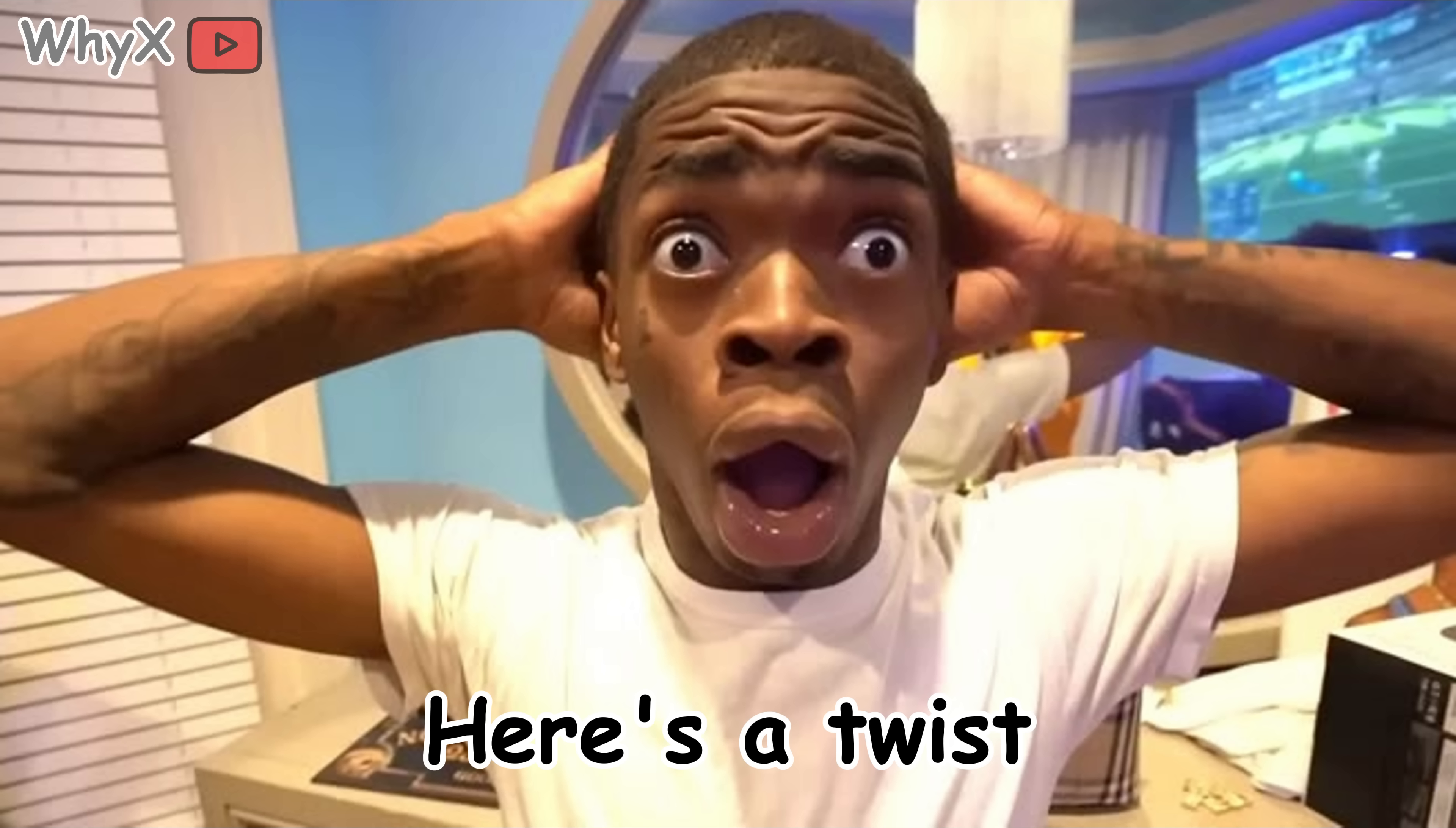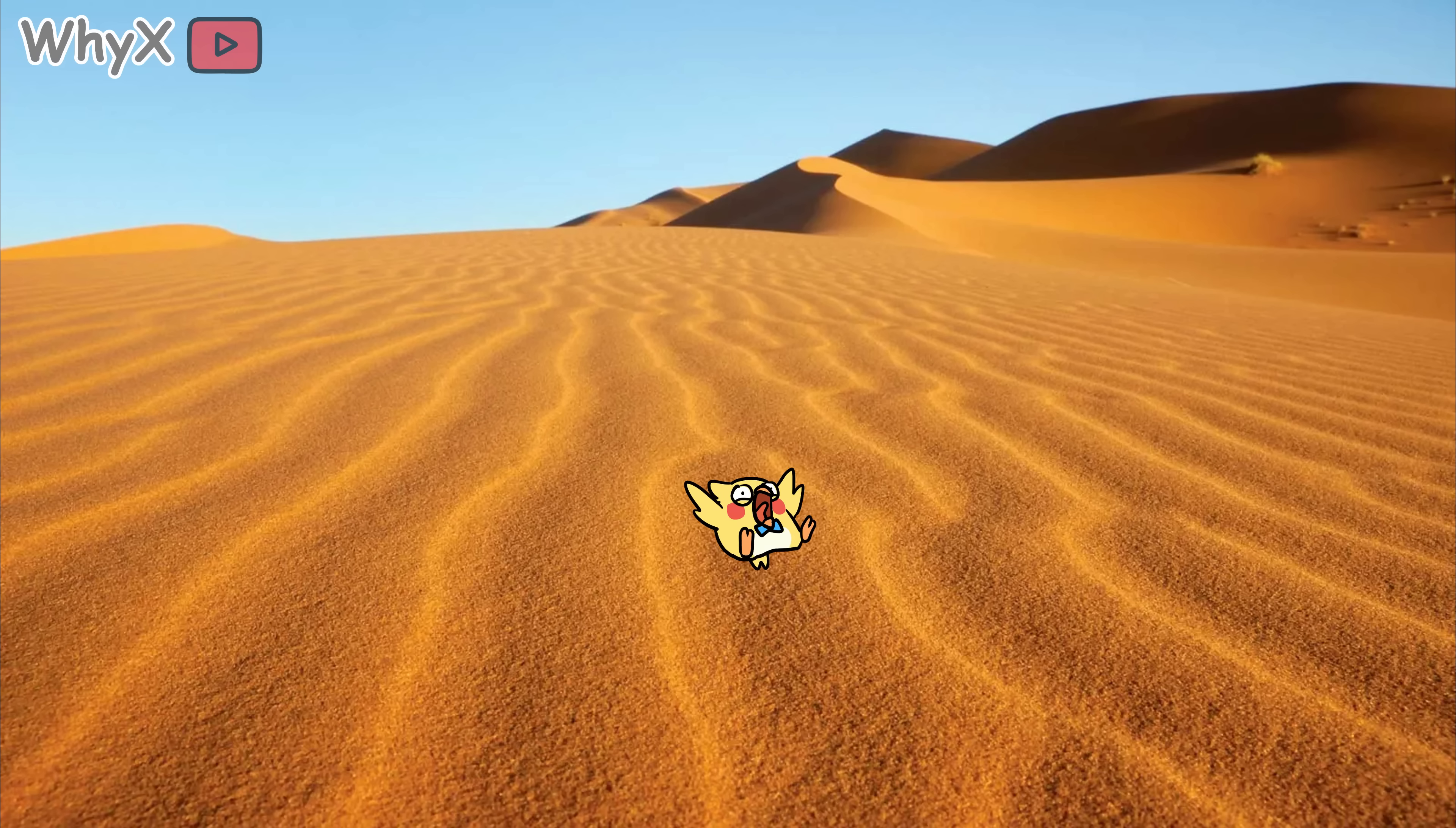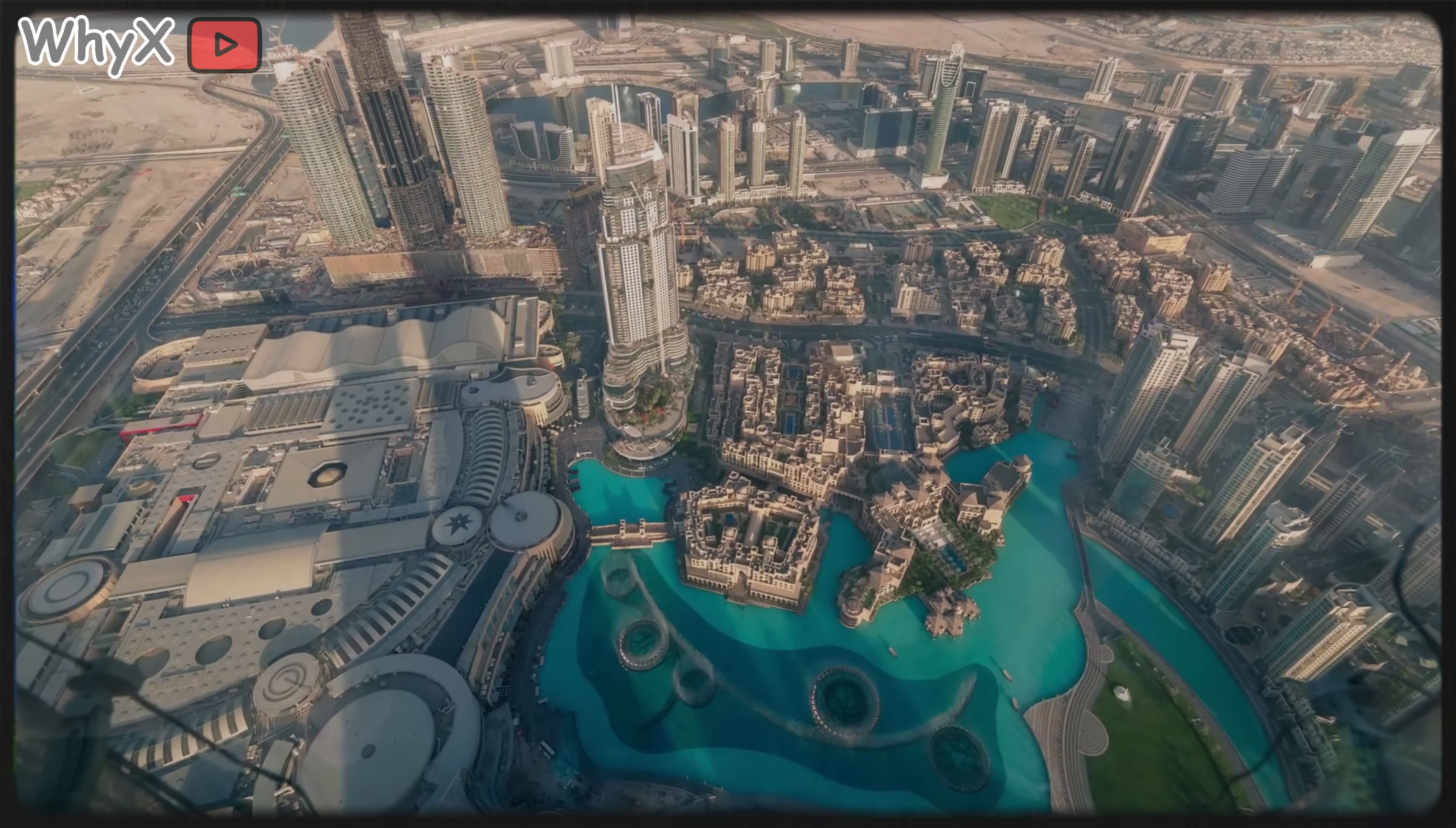Here is a twist that seems insane. Countries covered in desert sand like Saudi Arabia and the United Arab Emirates actually import sand from other countries. Why? Because desert sand, as mentioned earlier, is too smooth for construction. It is like trying to build a sand castle out of powdered sugar. So Dubai, famous for its skyscrapers and megaprojects, often buys sand from Australia. Yes, a desert nation imports sand to keep building. That is how specific and critical the right kind of sand is.